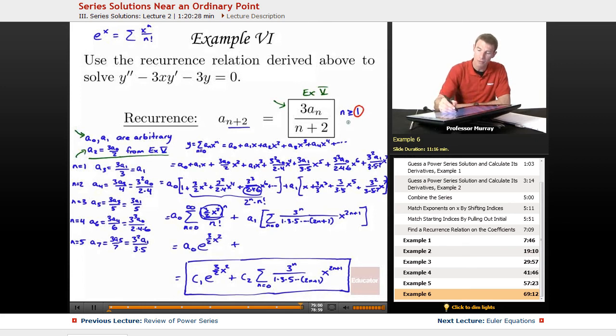But then we figured out A2 in terms of A0. And then plugging in the different values of N into this recurrence relation, N equals 1, 2, 3, and 4, gave us the higher coefficients in terms of the lower ones. A3 came back to A1. A4 came back to A2, which comes back to A0. A5 down to A3 to A1. A6 down to A4, down to A0, and so on.